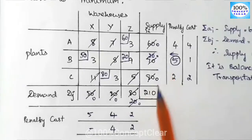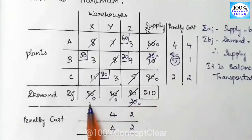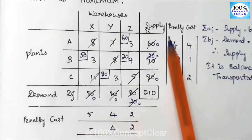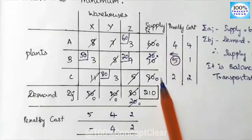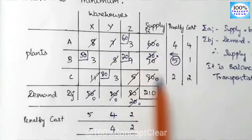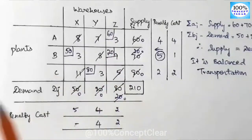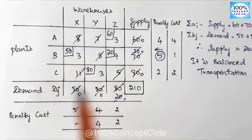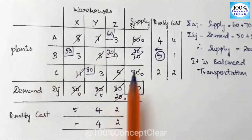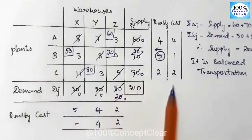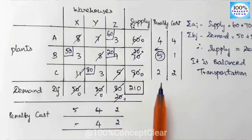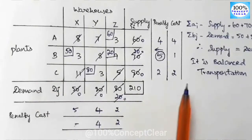Now supply is 20 and remaining demand is 20, so we allocate 20. Demand and supply both cancel. All allocations are complete — initial solution is ready. The next step is to find the optimum solution using the MODI method.